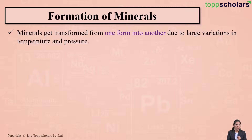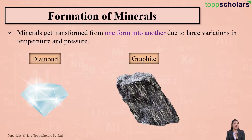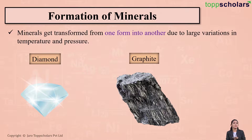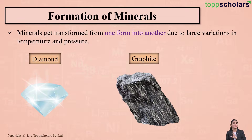Minerals are also formed due to variations in temperature and pressure. For example, diamond and graphite are allotropes of carbon, but they are formed at different temperatures and pressures. This means that under different temperature and pressure conditions, minerals get transformed from one form into another — for instance, diamond can be converted into graphite.